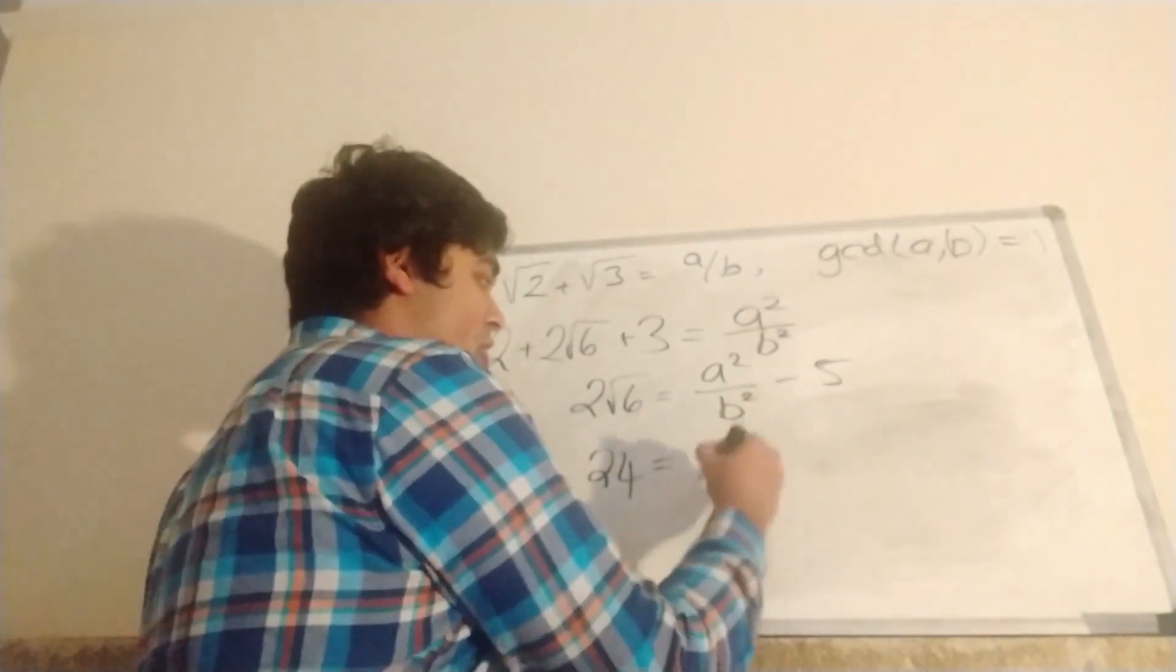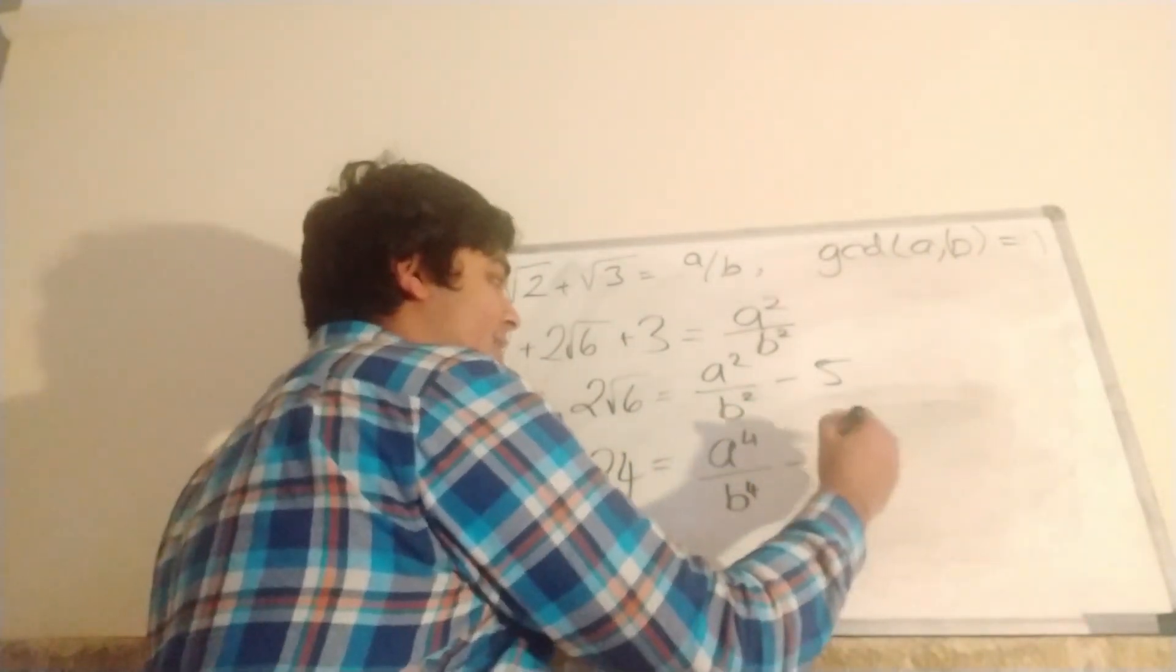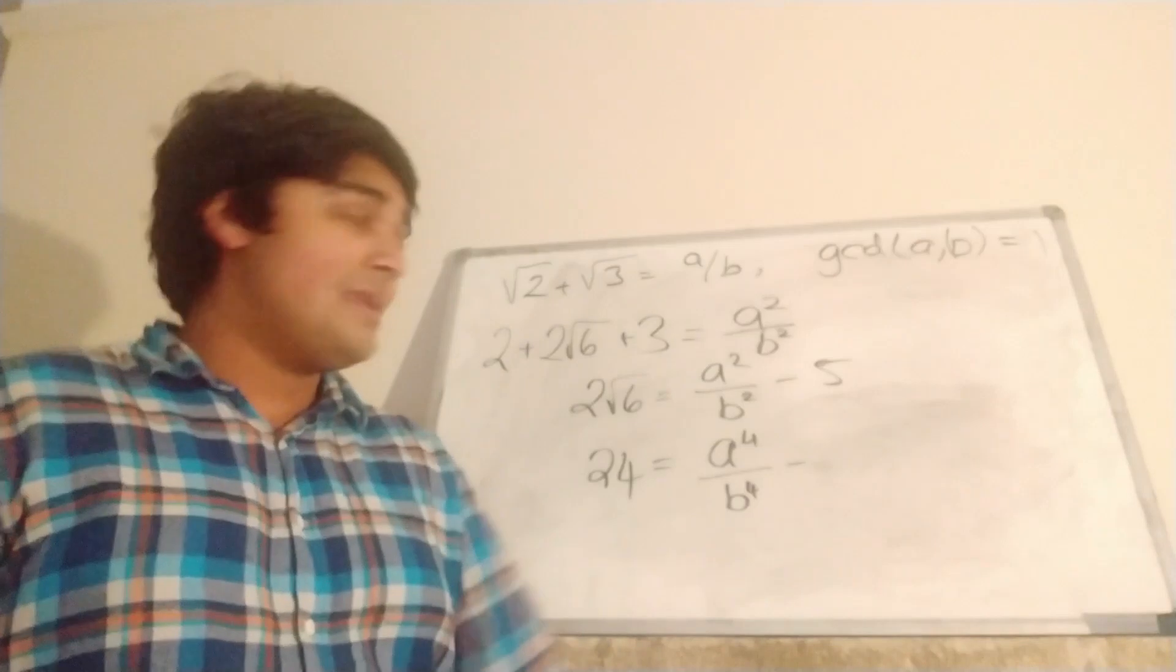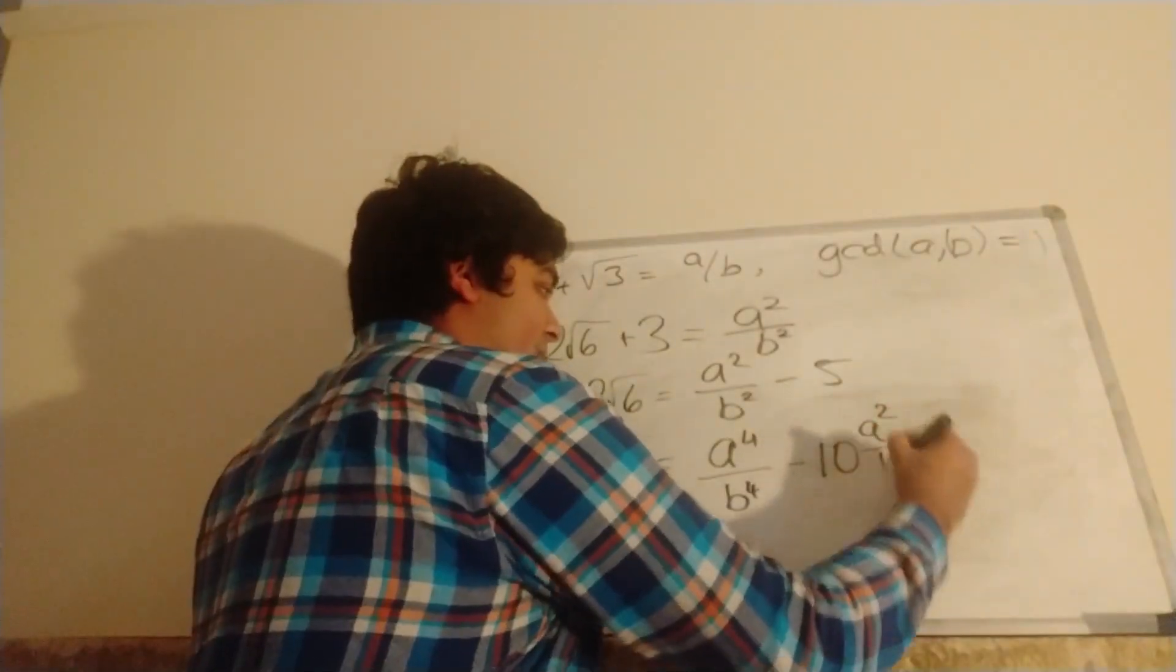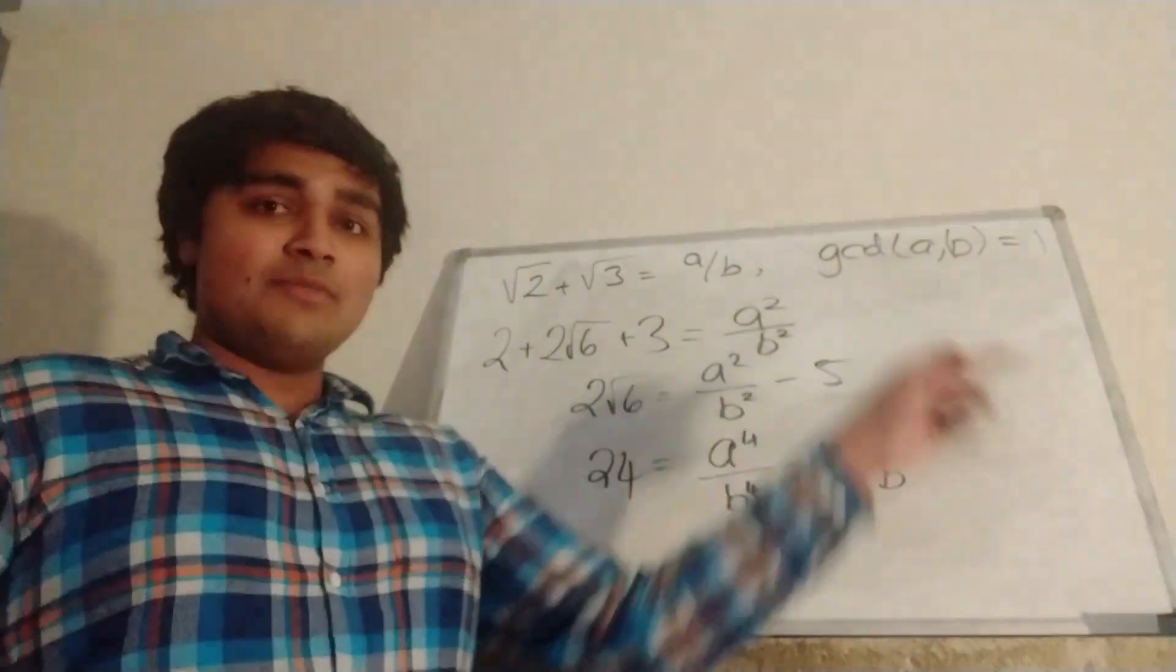And that equals this guy squared, so that's A⁴/B⁴ - 5 times 2 times A²/B², which is -10A²/B², and then plus 5 times 5.